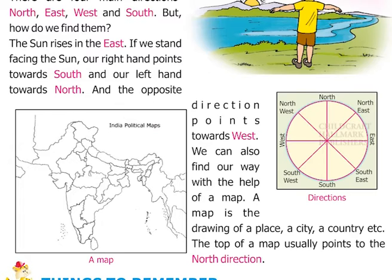We can also find our way with the help of a map. A map is the drawing of a place — a city, a country, etc. The top of the map usually points to the north direction.